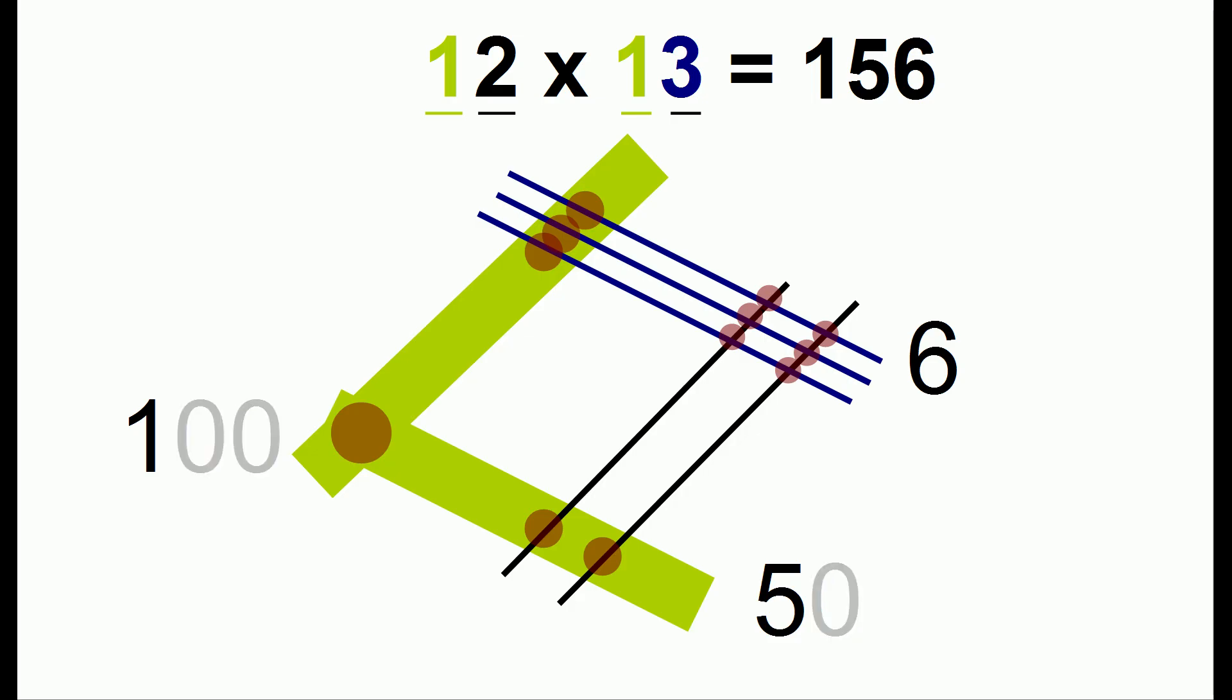The next thing we can do is we can get rid of these zeros. Because every time we do this, in the middle we're going to have an extra zero. And on the left side we're going to have two zeros.